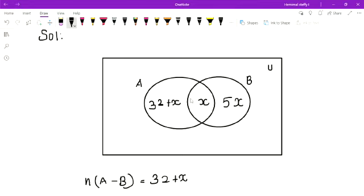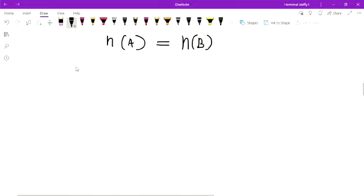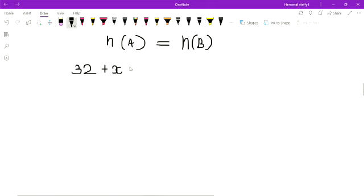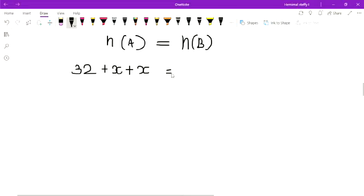That means B means the whole circle of B. So n(A) is equal to 32+x, 32 plus x, then you are adding with the x also. Then n(B) is equal to 5x plus x.